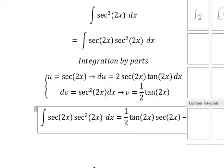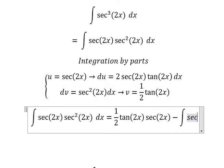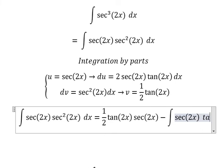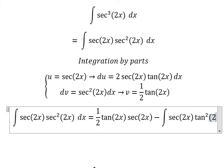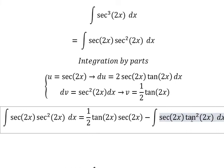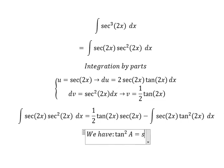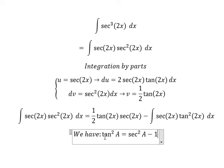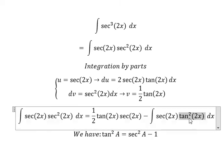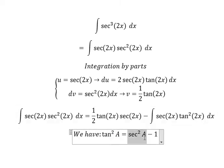Now we just have the integration of secant(2x)·tan²(2x) dx. Next, we use the formula: tan²x = sec²x − 1. So we need to change tan²(2x) into sec²(2x) − 1.